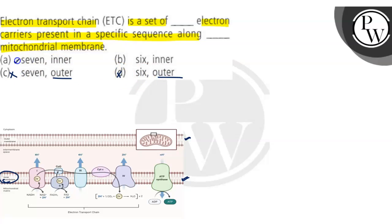Now we will see whether six electron carriers are present or seven electron carriers are present. Okay, now let's go.